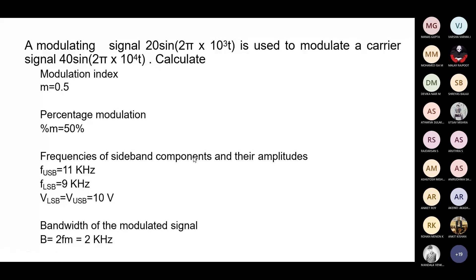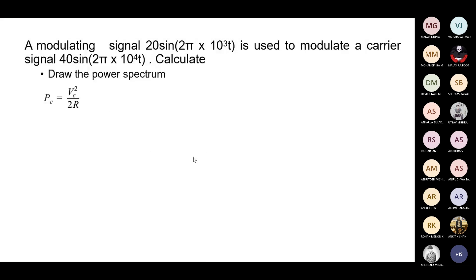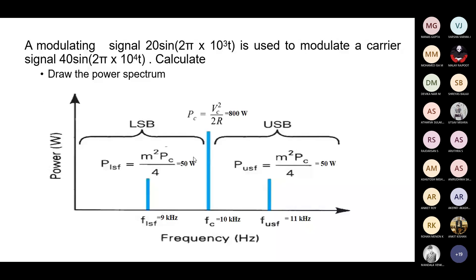Now draw the power spectrum. For the power spectrum, calculate the carrier power and the sideband power. The resistance value is not given, so assume R = 1 ohm. Carrier power Pc = Vc²/2 = 800 watt. The sideband power is 50 watt. Mention the carrier power and sideband power in the spectrum along with the carrier frequency and upper and lower side frequencies.